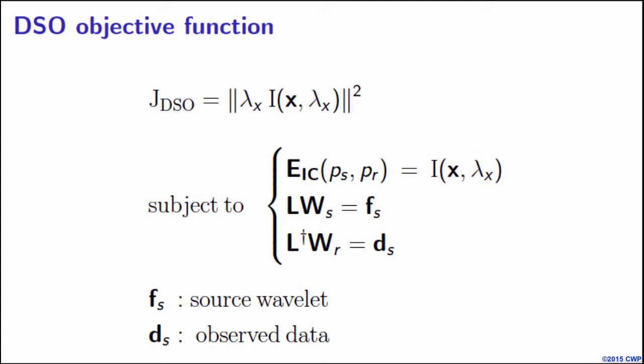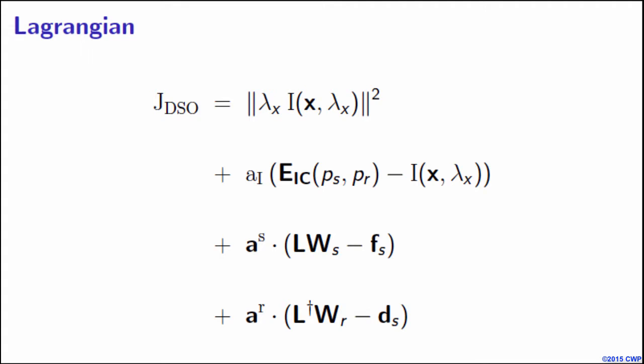These physical constraints can be incorporated explicitly by using Lagrangian multipliers a_i, a_s, and a_r. The variables i, w_s, and w_r are called state variables, and Lagrangian multipliers are called the adjoint state variables.